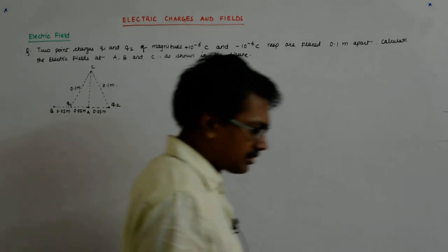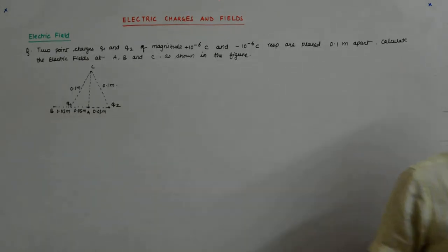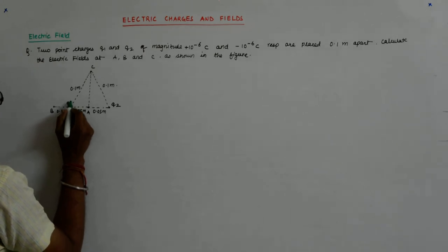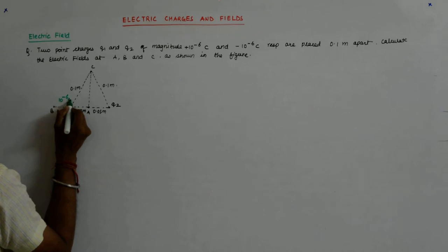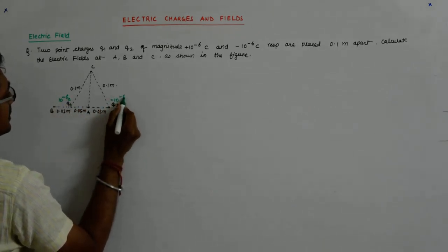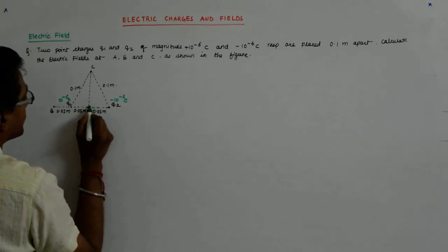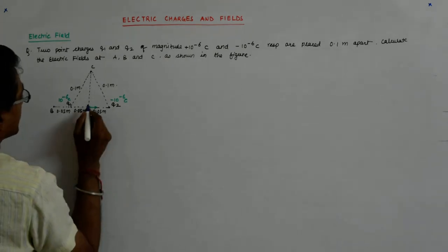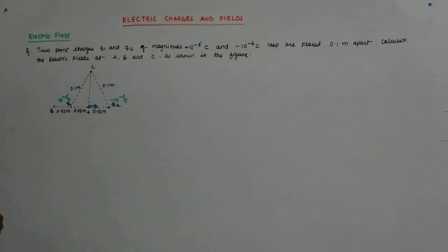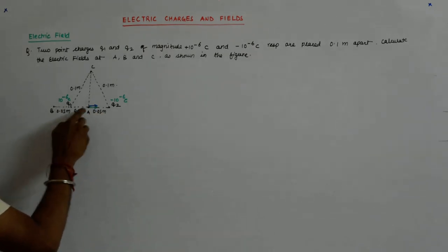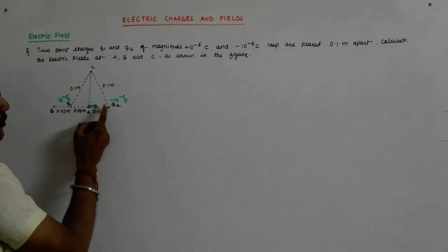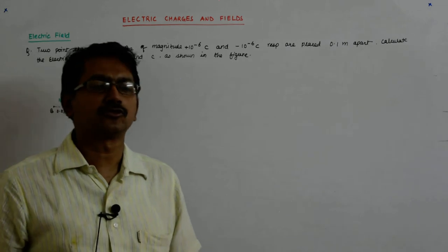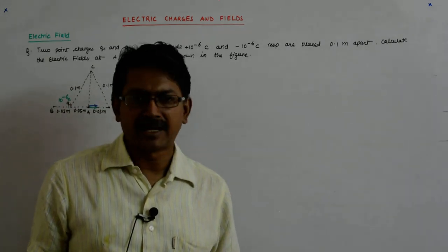At point A, this is the positive charge — 10 to the power minus 6 coulomb — and this is minus 10 to the power minus 6 coulomb. Due to the positive charge the field radiates outward (the green one), and due to the negative charge the field also points in the same direction — radially inward toward the negative charge. So these two vectors are in the same direction and their magnitudes add up straightforwardly.